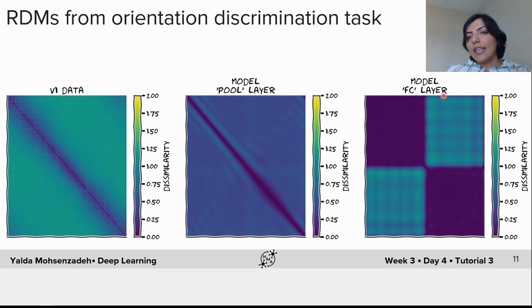The fully connected layer RDM shows a categorical structure, meaning that these parts of the RDM which correspond to stimuli with orientation to the left are more similar, and the stimuli oriented to the right are more similar, but they are more distanced or apart from each other, a clear categorical structure.